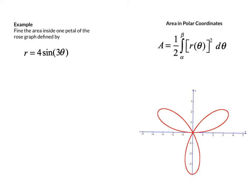In this example we're looking at what's called a rose graph. It's a polar function, r equals 4 times the sine of 3 theta, and we're trying to find the area within one petal of this rose. In order to do that we're going to use the formula for finding the area contained inside of a polar curve.